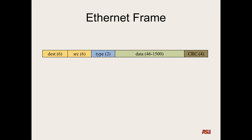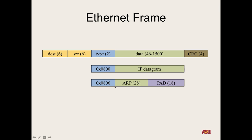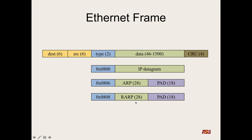There are various types. So if the type is hex 0800, this means we have an IP datagram. If it's 806, it means it's an ARP request, which we'll look at in a second. If it's 808, it means it's a reverse ARP request, and so on. There's a whole list you can go through to understand exactly what each of these types are and what they mean.